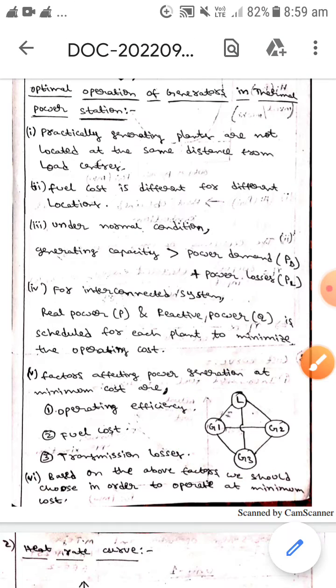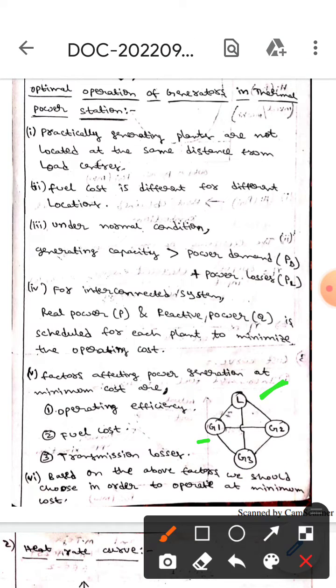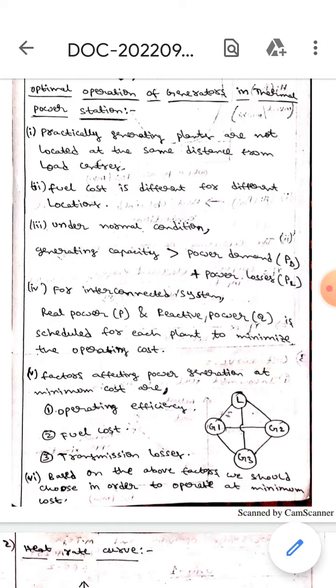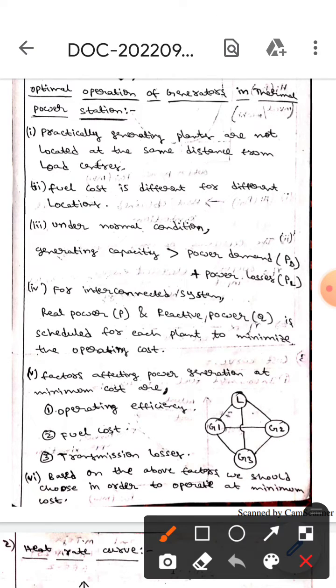Factors affecting power generation at minimum cost are operating efficiency, fuel cost, and transmission losses. Based on the above factors, we should choose some of the generators in order to operate at minimum cost.